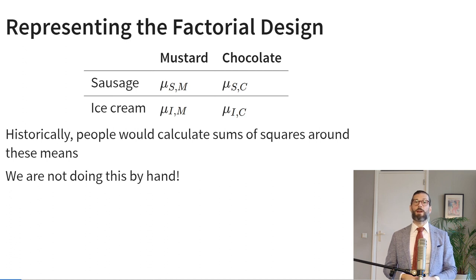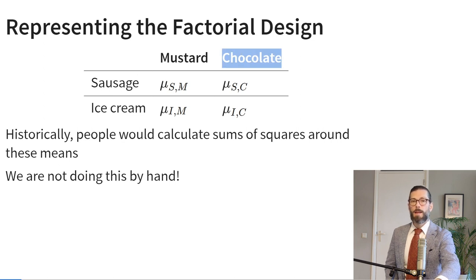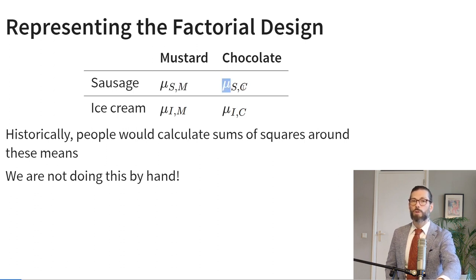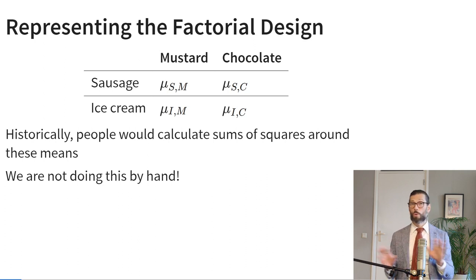We can represent this factorial design in a table where rows are the levels of food and columns are the levels of topping, giving four unique combinations. Each combination has an observed mean level of enjoyment — a mean mu for sausage with mustard, sausage with chocolate, ice cream with mustard, and ice cream with chocolate. Historically, people would calculate sums of squares around these four group means by hand. Instead, we use a regression model to represent factorial ANOVA using dummy-coded variables.